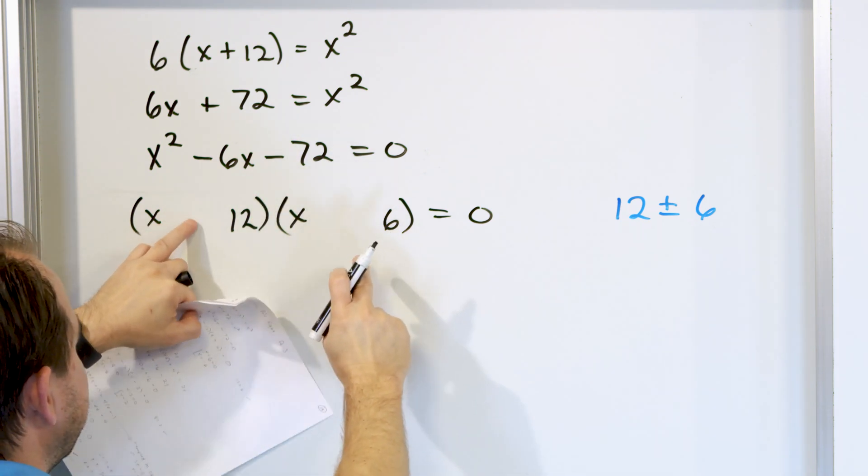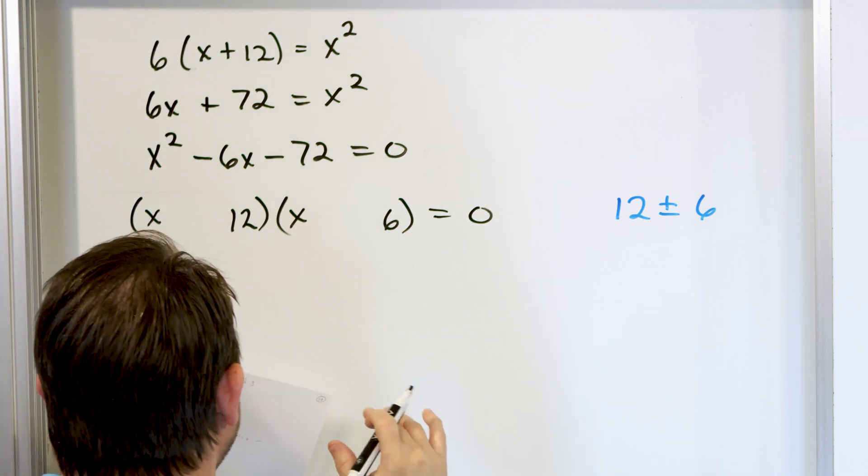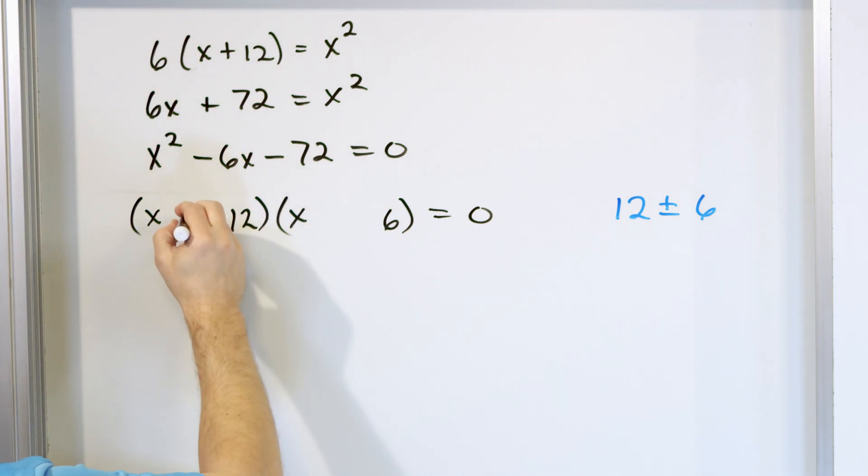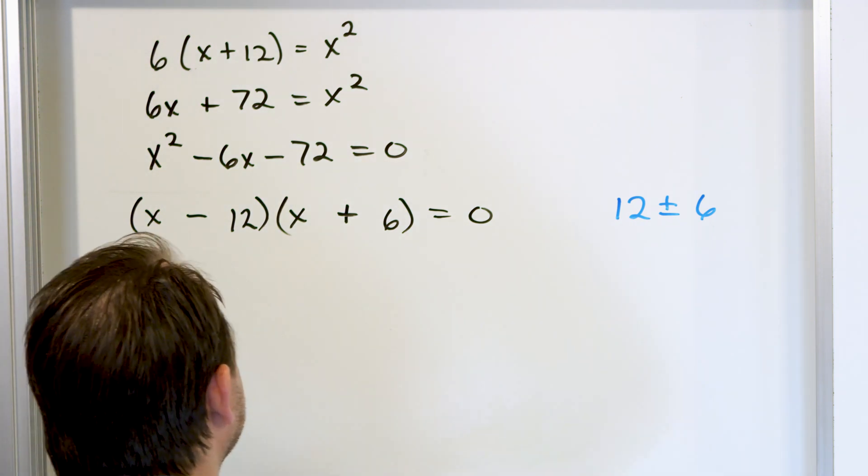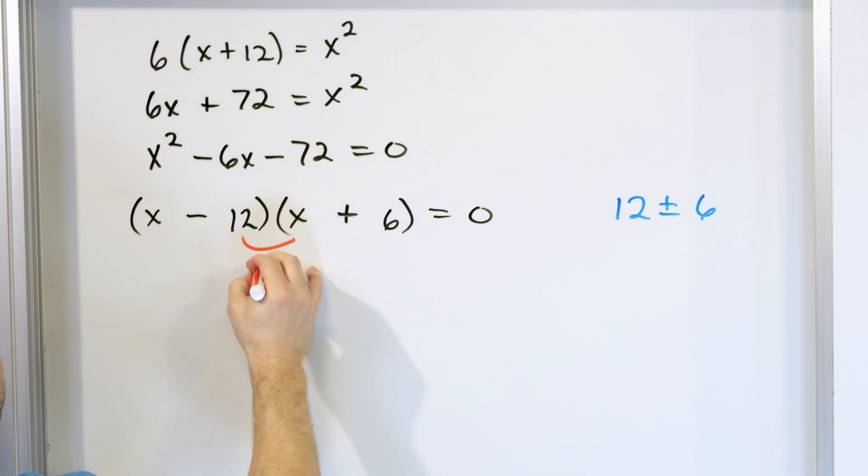Negative 72 means that these have to have opposite signs, either positive negative or negative positive. So you go through in your mind however you like to do it, but eventually you'll land on negative and positive, and to check that this is correct, the inner terms will give me negative 12.